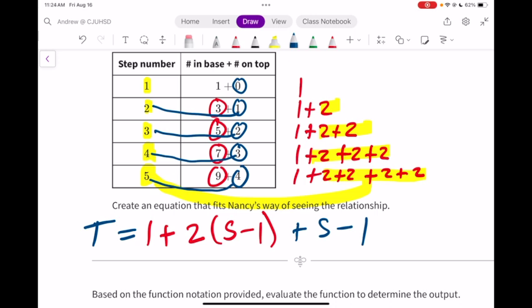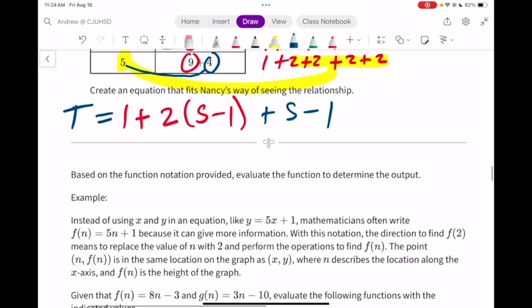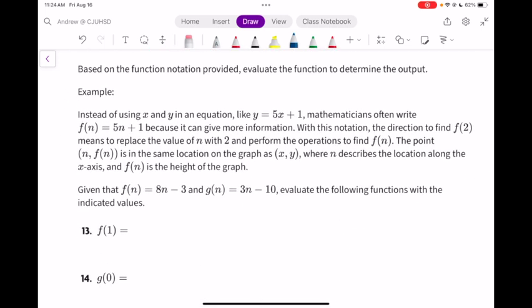Now I add some more information for you in the next paragraph. This is called function notation. It says, instead of using x and y in an equation like y equals 5x plus 1, mathematicians often write f(n) equals 5n plus 1 because it can give more information. With this notation, the direction to find f(2) means to replace the value of n with 2 and perform the operations to find f(n).